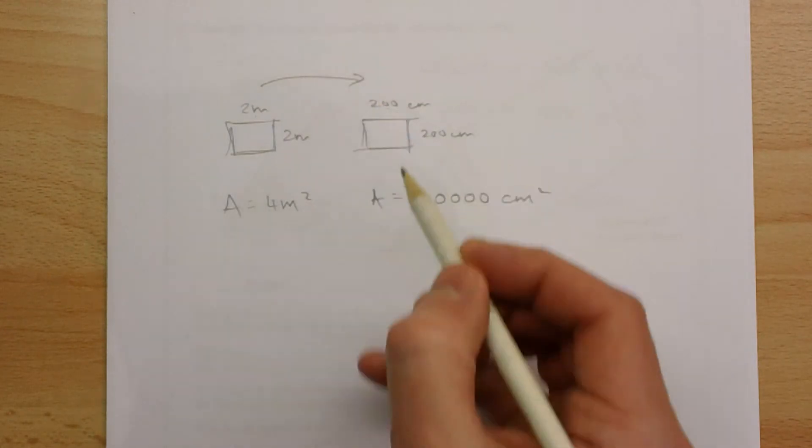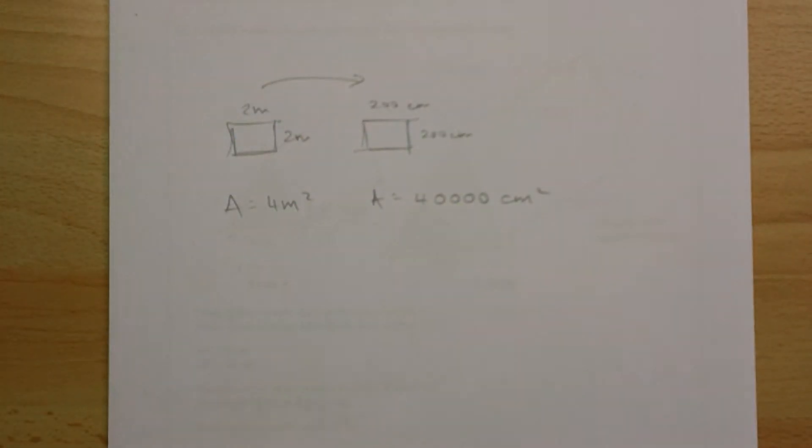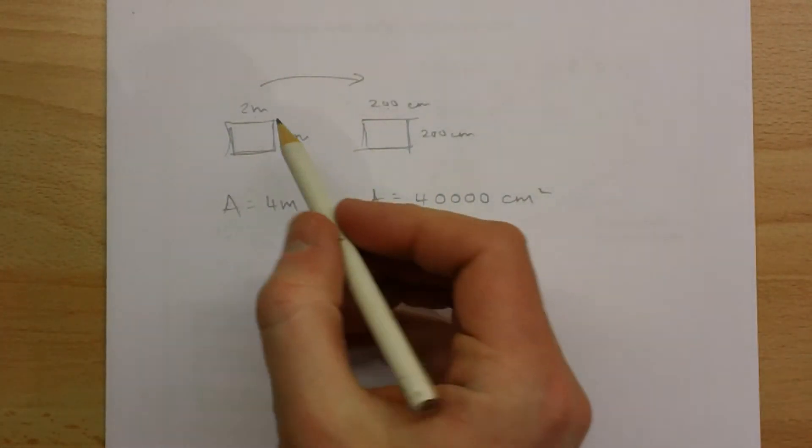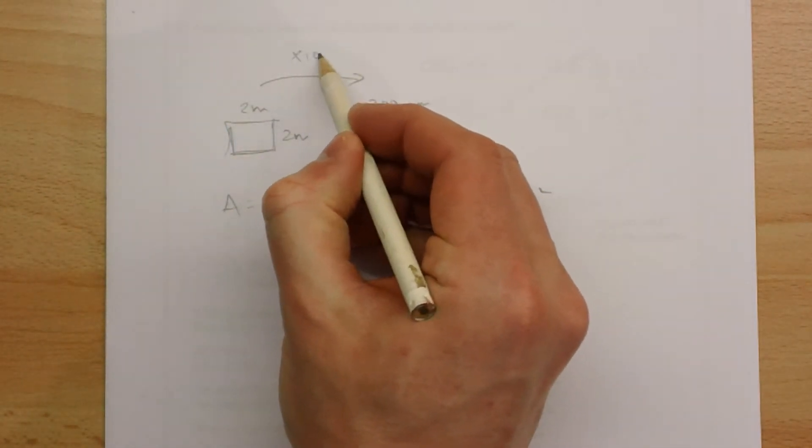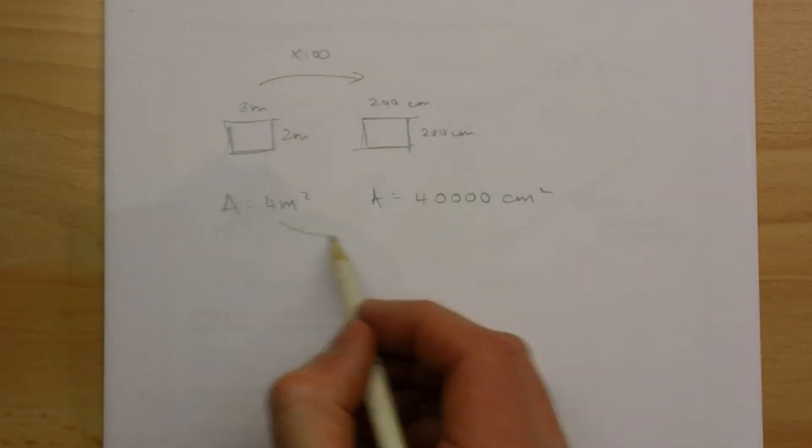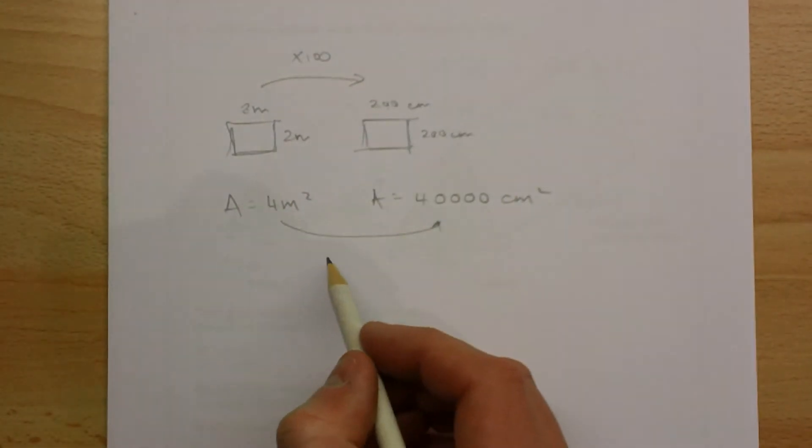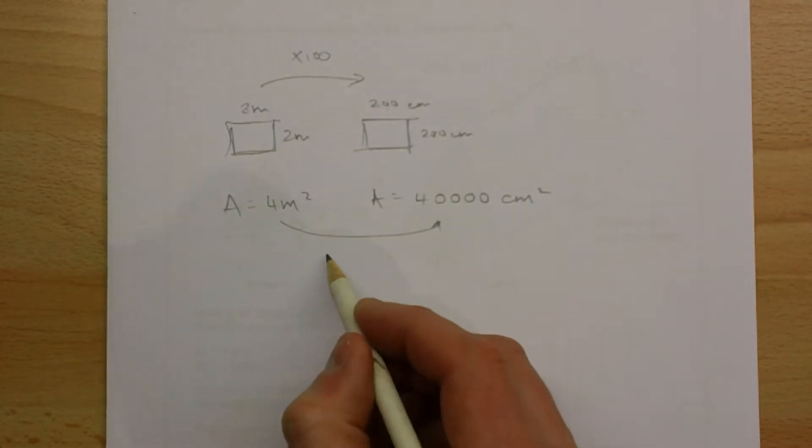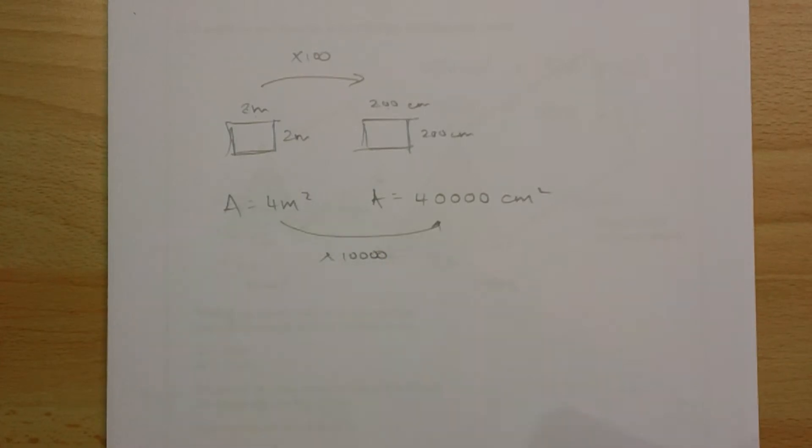Now the scale factor, well there's no scale factor enlargement because they're identical, but in order to convert the units there's 100 centimeters in every meter. But notice the factor here is not 100, it's actually 10,000.